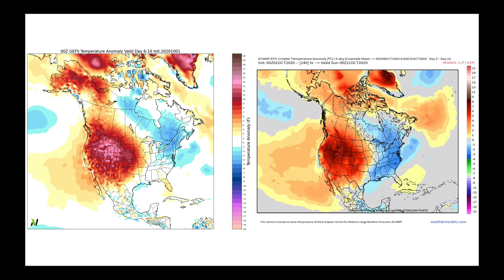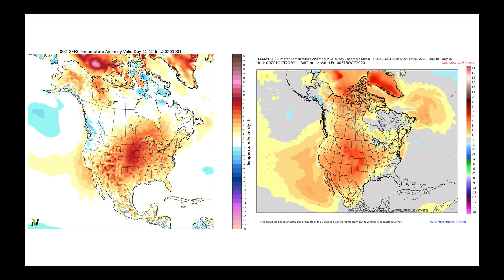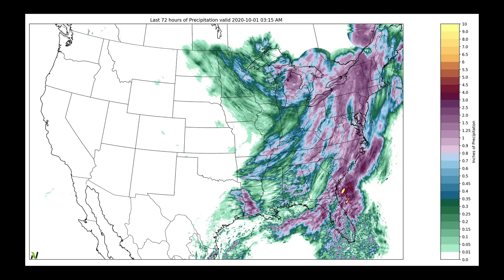Looking out at days 6 through 10, both models are really picking up on a spread to the east of that warmer weather. In the day 11 to 15 period, the jet stream wants to do something a bit more amplified — both models agree on that. This is what brings unsettled weather into the Pacific Northwest but keeps things open and warm in terms of jet stream flow across the United States.